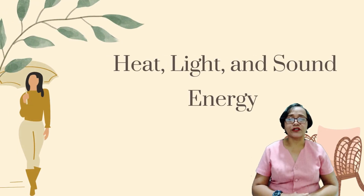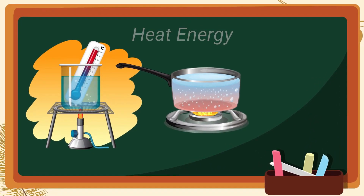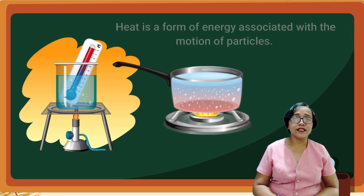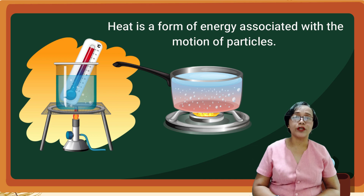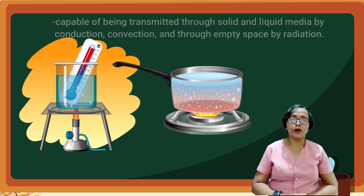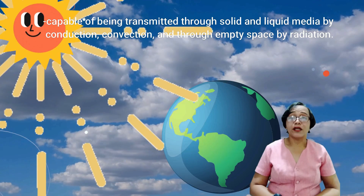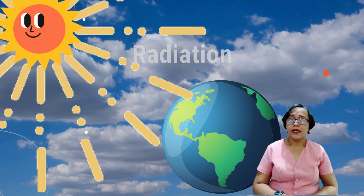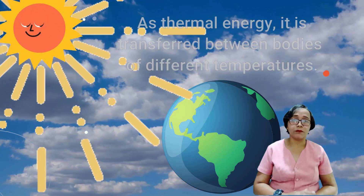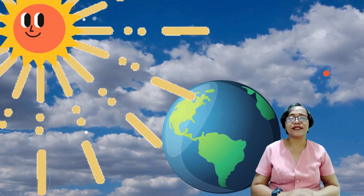There are different forms of energy: heat energy, light energy, and sound energy. Today, we are going to talk about heat energy. Heat energy is a form of energy associated with the motion of particles. It is capable of being transferred through solid and liquid media by convection and conduction, and through empty space by radiation. It is also called thermal energy, a transfer between bodies of different temperature. To further understand the concept of heat transfer, let us take a look at this activity.